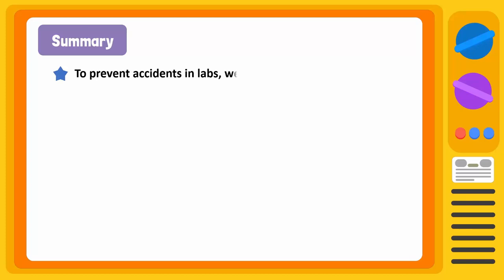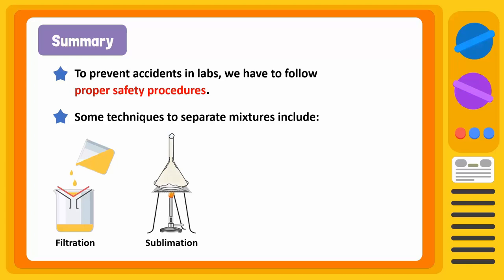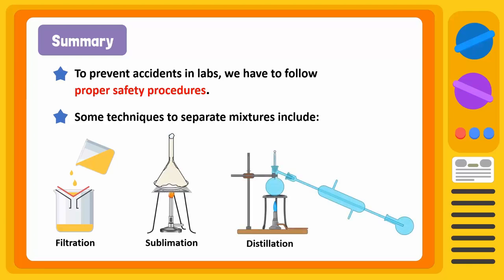Let's summarize what we learnt today. To prevent accidents in labs, we must follow proper safety procedures. Mixtures are separated by the following methods. Filtration is a process of separating insoluble solids from a mixture. Sublimation is a process of purifying a solid by vaporizing it and condensing the vapors to form the solid directly, without passing through a liquid state first. Distillation is a process of purifying a liquid by boiling it, letting it evaporate into steam, and leaving the solid constituents behind in the container. The steam is then cooled down into water — this is condensation.